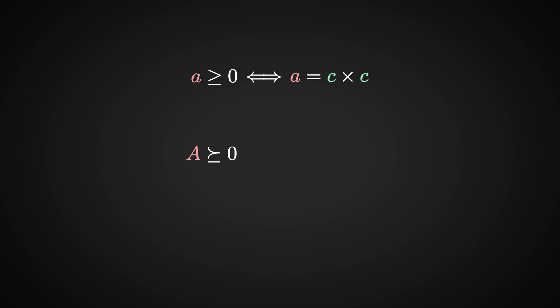In other words, a matrix A is positive semi-definite if and only if you can write it as C transpose times C for some other matrix C. Why the transpose, you might ask? Well, for one, without the transpose, C transpose C is not even a symmetric matrix. There is another reason that will become clear in a second.